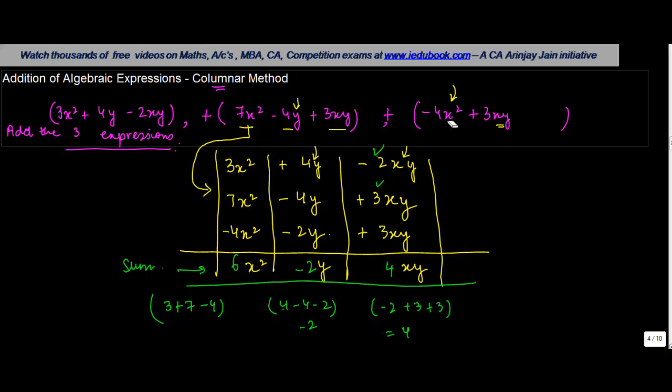You would have arranged the first and the second. The third one, you would have put in minus 4x squared here, plus 3xy would have come here. What would happen here? Because you don't have anything below this variable, you will leave this blank. And then, at the time of addition, you will assume that you have a 0 here.